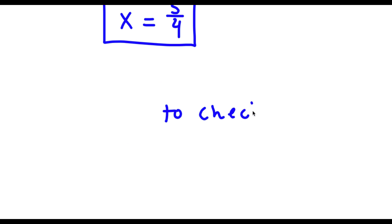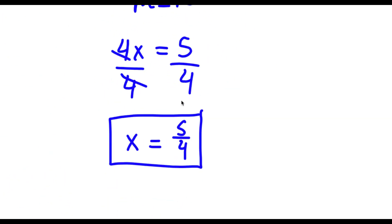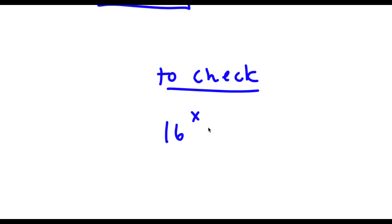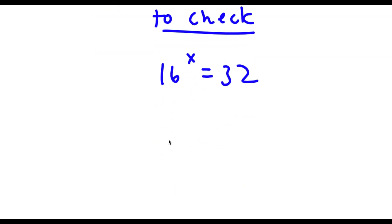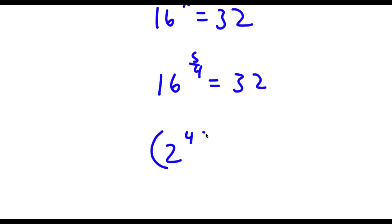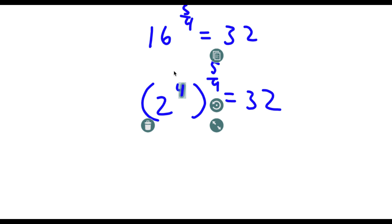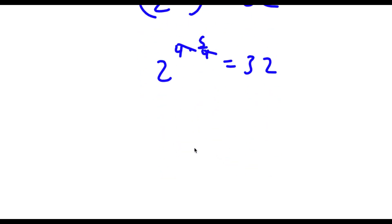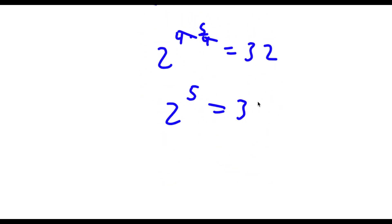So now to check: my original equation was 16 to the power of x is equal to 32, and I know x equals 5 over 4, so I have 16 to the power of 5 over 4 is equal to 32. Now 16 is the same thing as 2 to the power of 4. So I have 2 to the power of 4 to the power of 5 over 4 is equal to 32. This is the same thing as 2 to the power of 4 times 5 over 4 — these two fours cancel out, leaving 2 to the power of 5 is equal to 32. So I have 32 equals 32, and my solution is correct.